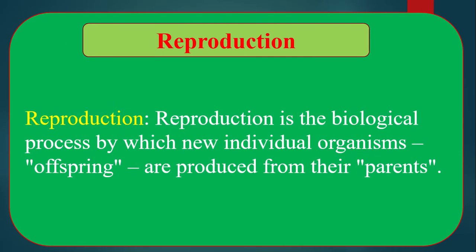Reproduction. What is Reproduction? Reproduction is the biological process by which new individual organisms — that means offspring — are produced from their parents. In other words, reproduction is the biological process through which offspring are produced from their parents.